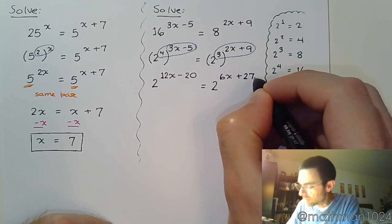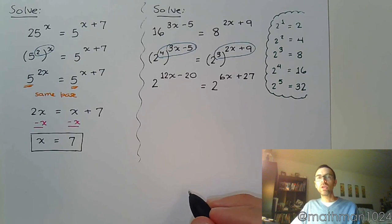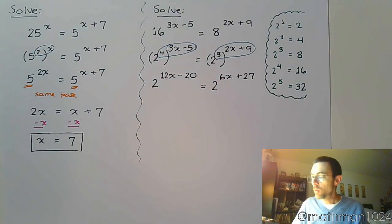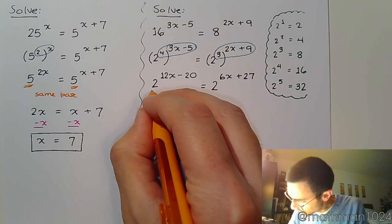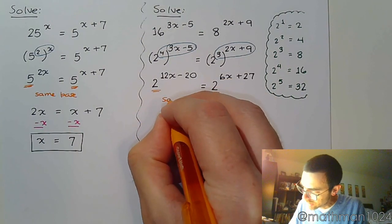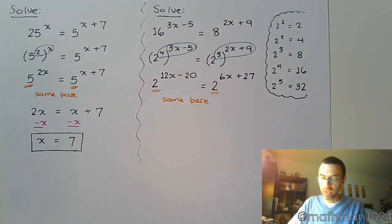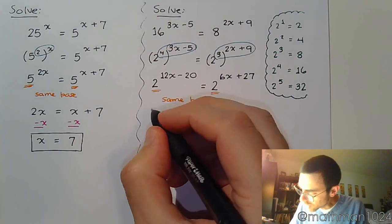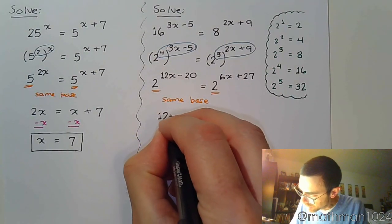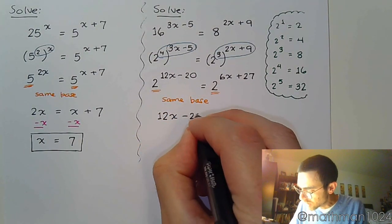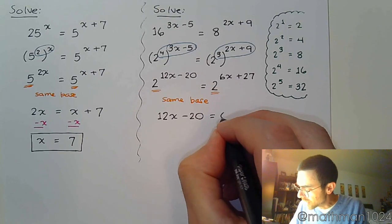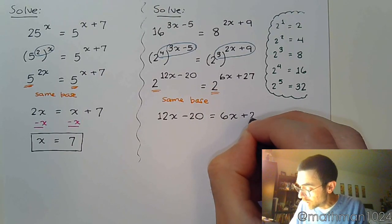We raised powers to powers, we now have the same base for these guys - they both have a base of 2. Since they have the same base, that means their powers must be equal. This is all connected to the fact that exponential functions are one-to-one.